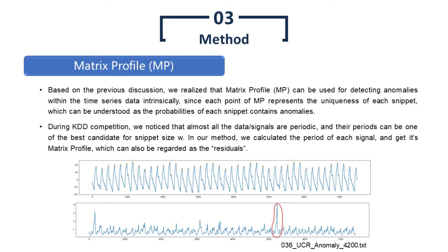Based on the previous discussion, we realized that matrix profile can be used for detecting anomalies within the time series data intrinsically since each point of matrix profile represents the uniqueness of each snippet, which can be understood as the probabilities of each snippet contains anomalies. During the KDD competition, we noticed that almost all the signals are periodic, and their periods can be one of the best candidates for snippet size. In our method, we calculated the period of each signal and get its matrix profile, which can be regarded as the residuals. The bottom plot demonstrates an instance of the result of the matrix profile method.